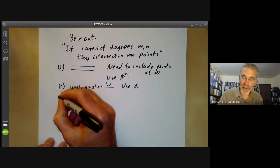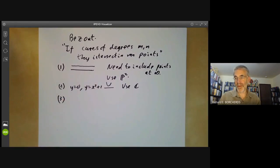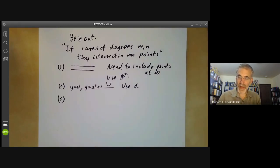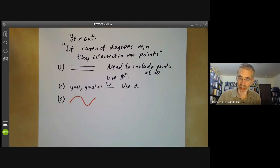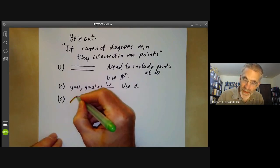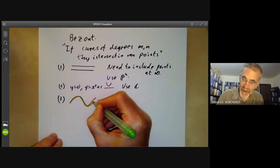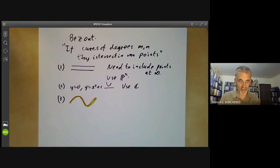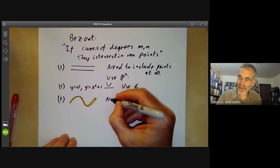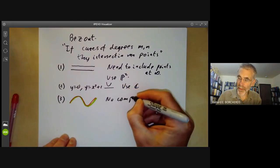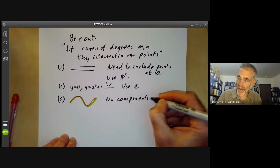The third problem is the two curves may have a component in common — in fact, they may even be the same. If we take a curve and intersect it with exactly the same curve, they have an infinite number of points in common. So we should say that they need to have no components in common.